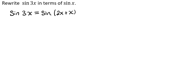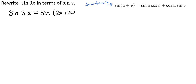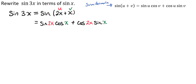Now we see that we're going to need the sum formula for sine. Looking at our sum formula, we know that 2x is going to be our u, and x will be represented by our v. So we'll go ahead and plug that in, which gives us the sine of 2x times the cosine of x, plus the cosine of 2x times the sine of x.